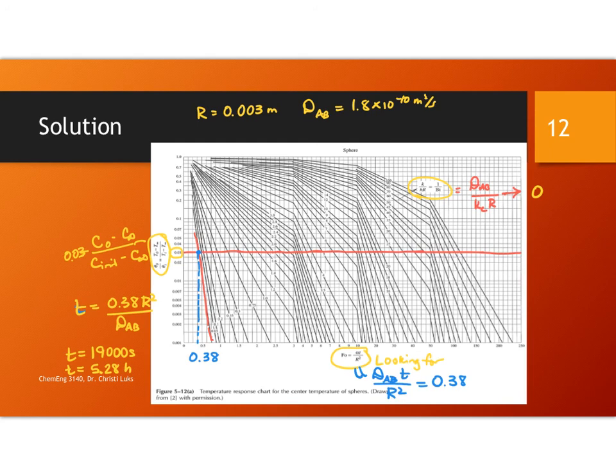So my estimate is that it would take about five hours in order to get down to only 3% caffeine. So this is an example of using the Heisler charts. You, again, can then also take this answer and use it with the second chart to figure out what the caffeine concentration would be at some point outside of the center, if you wish to. I'm going to leave it here.